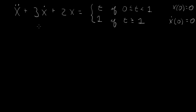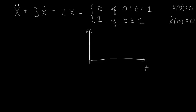Let's consider this differential equation. The different aspect of this differential equation is that the right-hand side is a piecewise continuous function. If I draw a graph of the right-hand side, this has the function in red. It has the value of t, which is a line up until t equals 1, and then it becomes a constant, 1.